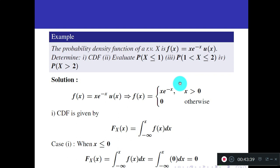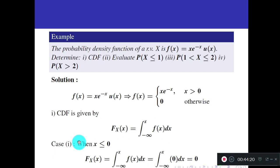Another example: the PDF of random variable x is f(x) = x · e^(−x) · u(x), or equivalently f(x) = x·e^(−x) for x > 0 and 0 otherwise. Find the CDF. Since it is a continuous random variable, we use integration: F_X(x) = integral from minus infinity to x of f(u) du.